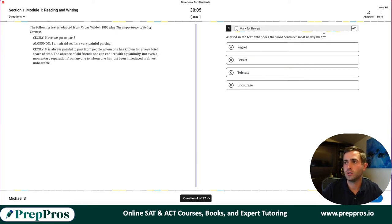Number four, used in the text. What does the word endure most nearly mean? This is really just like a classic word in context question that we see all the time on the typical SAT. So it's from an older play here. It's always painful to part from people whom one has known for a very brief space of time. The absence of old friends one can endure with equanimity. So like this is saying with a calmness of your emotional state. This is a really advanced vocab word. But even a momentary separation from anyone to whom one has just been introduced is almost unbearable. So we're going to be saying we're tolerating this as we're working through this question here.